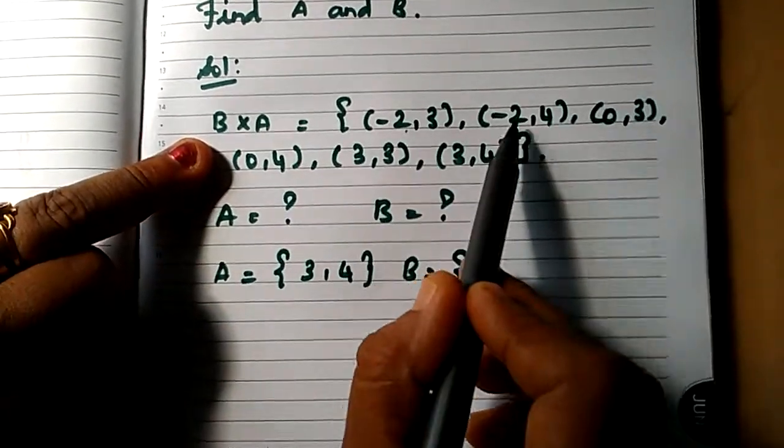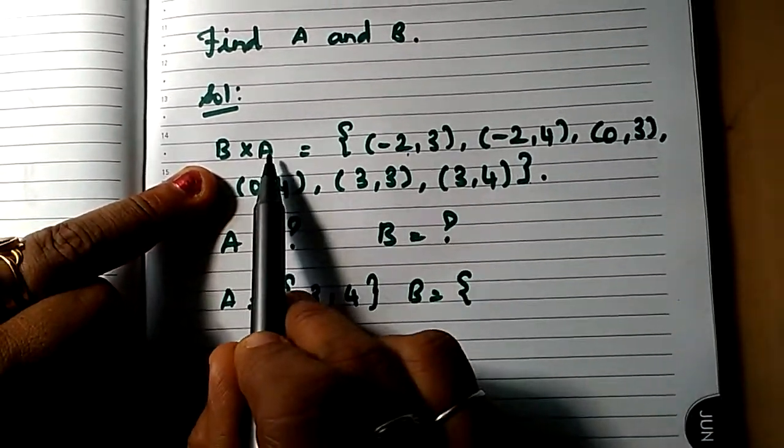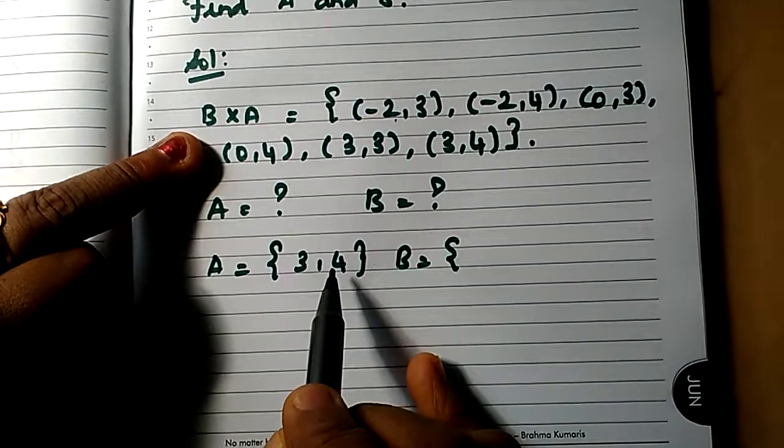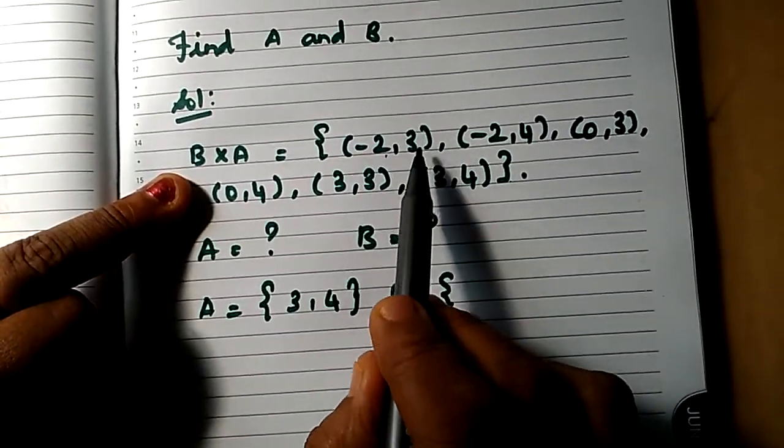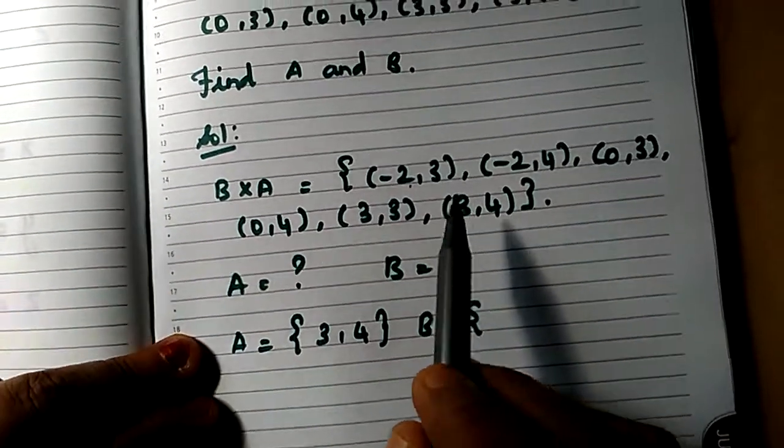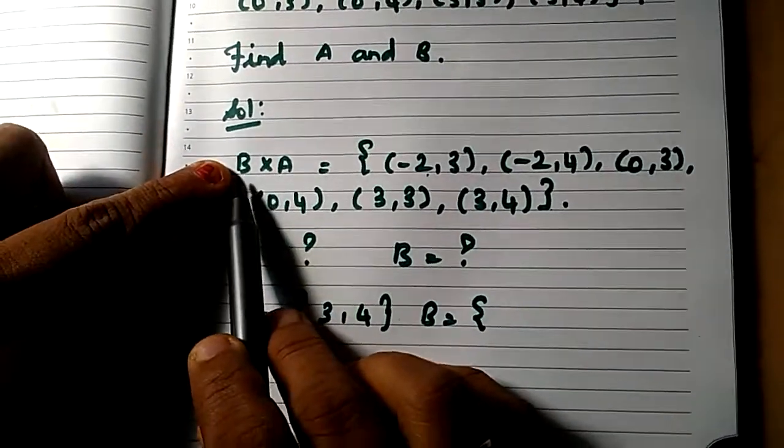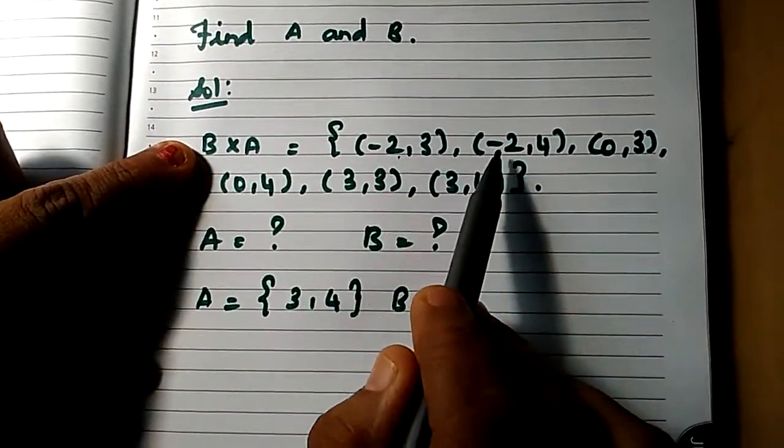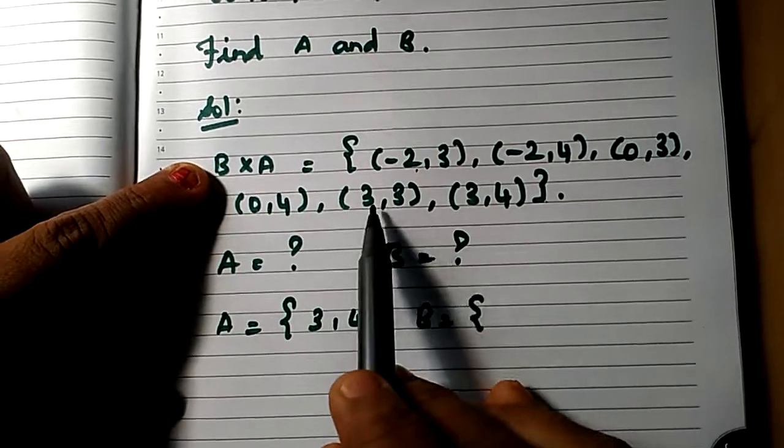So the first value is B. B appears twice in the Cartesian product. Looking at the second elements, we have 3 and 4, 3 and 4 twice it repeated. So B is minus 2, 0, and 3.